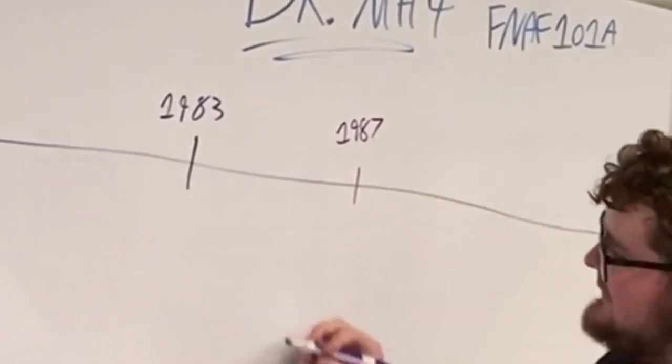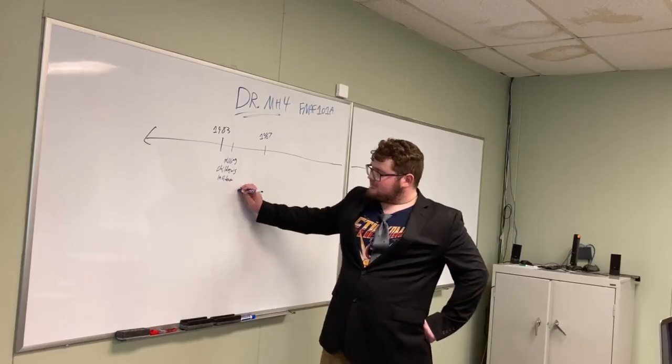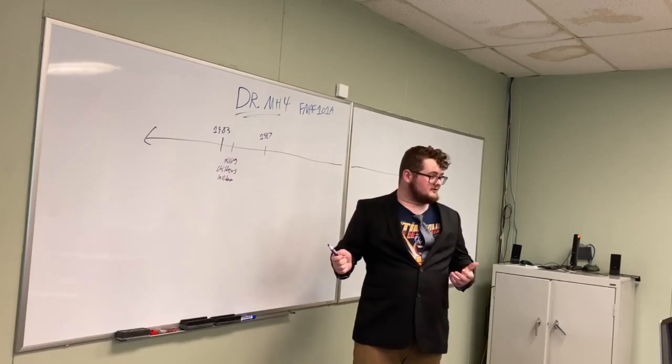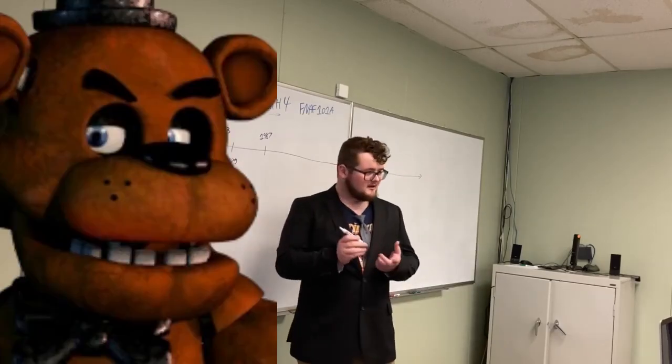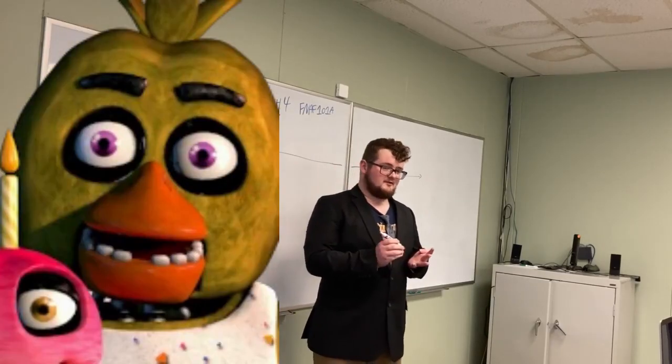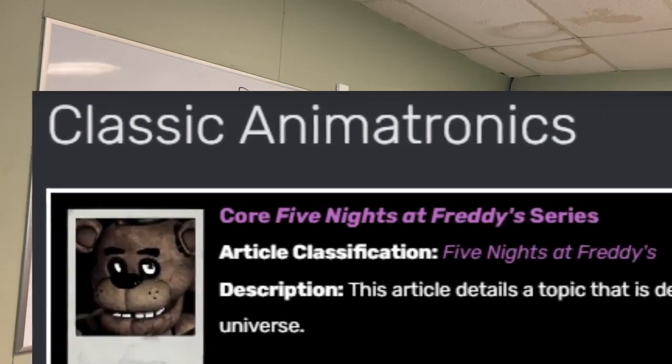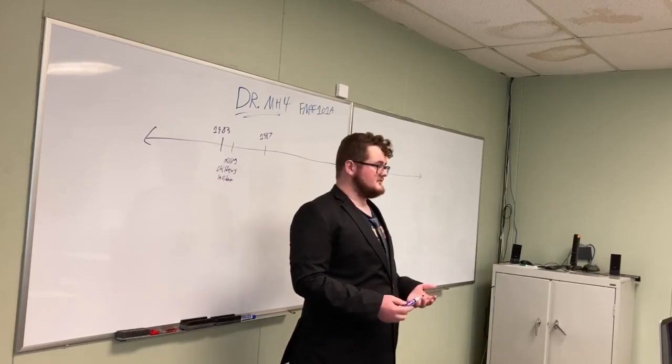The missing children's incident happens in between here. The missing children's incident was when the original four animatronic characters got possessed: Freddy, Bonnie, Chica, and Foxy, and those are known as the Showtime animatronics. Those are the original four from Five Nights at Freddy's 1.